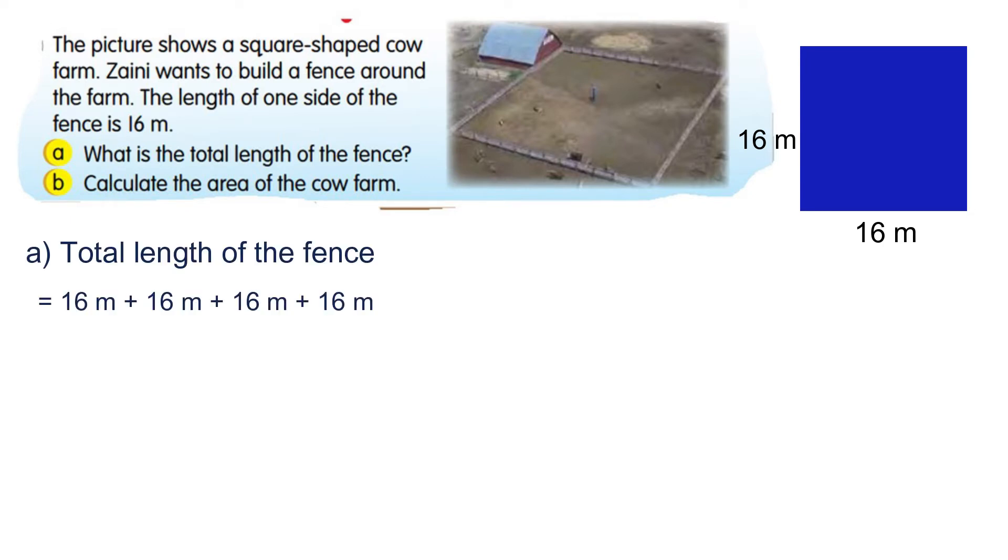So the total length of the fence that we need is 64 meters. Part B asks: calculate the area of the cow farm.